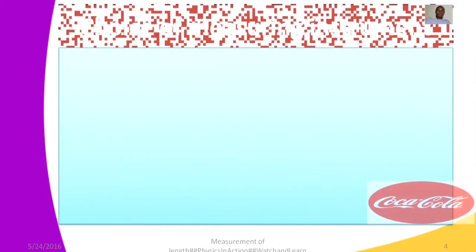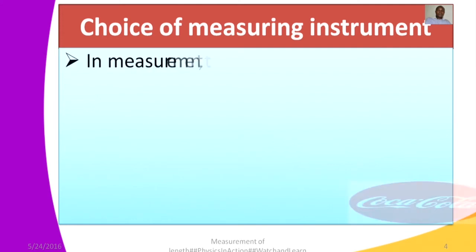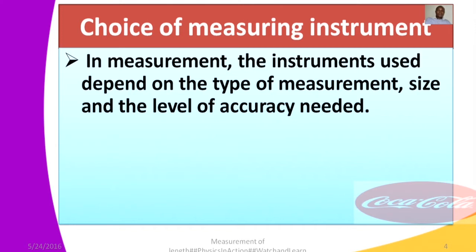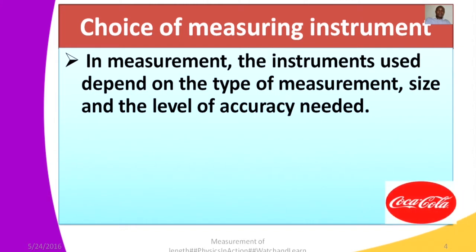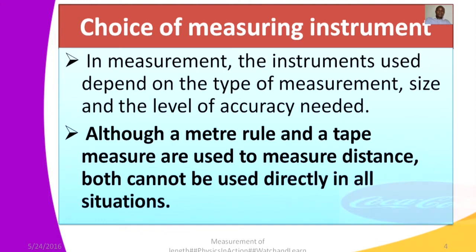Now we want to begin by looking at the choice of measuring instrument — how do you choose an instrument to measure a given quantity? In measurement, the instrument used depends on the mesh size and the level of accuracy needed. The kind of instrument you choose depends on the measurement you have to take, the size of the object, and the accuracy required. These are three factors to consider.